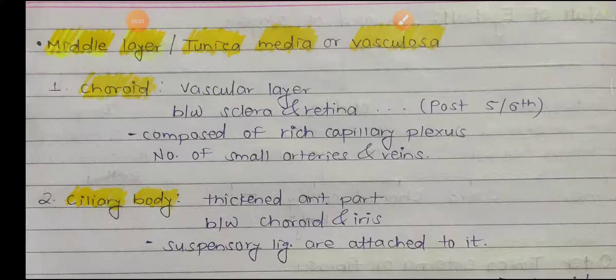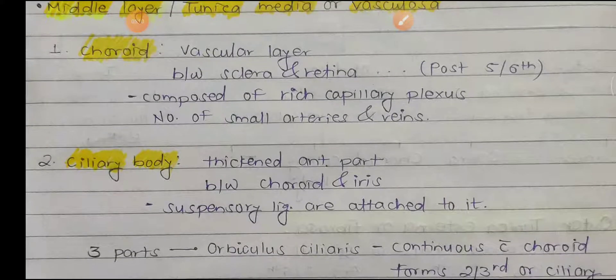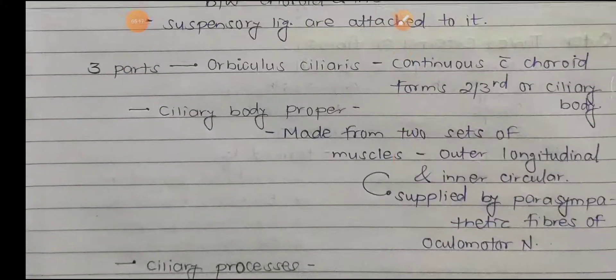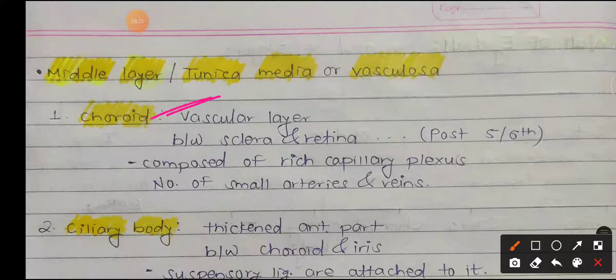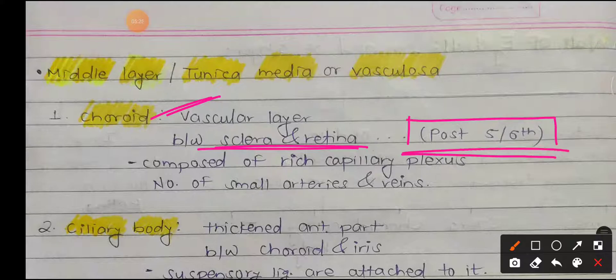The middle layer, also known as tunica media or tunica vasculosa, is vascular. It has three parts: the choroid, ciliary body, and iris. The choroid is a vascular layer present between the sclera and retina, occupying the posterior five-sixths. It is composed of a rich capillary plexus with numerous small arteries and veins, also called the choroid plexus.